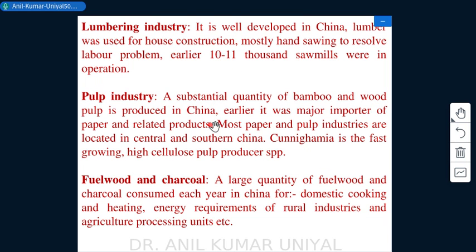The pulp industry produces a substantial quantity of bamboo and wood pulp in China. China was earlier a major importer of paper and related products. Most paper and pulp industries are located in central and southern China, and Cunninghamia is the fast-growing, high-cellulose pulp producer species used for this purpose.